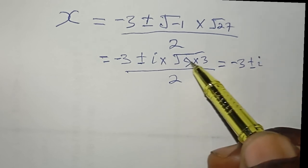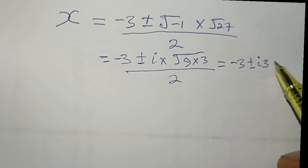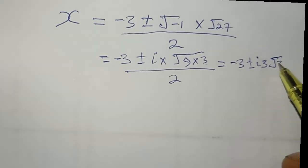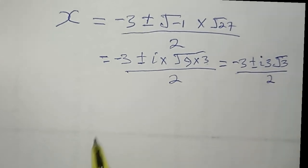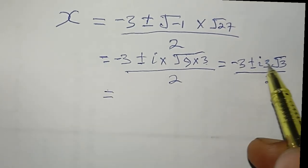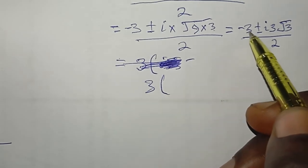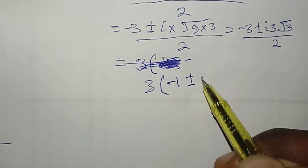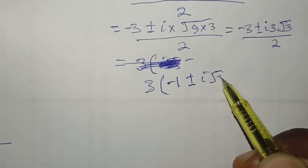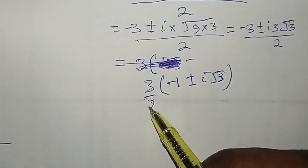Taking the square root of 9 out gives us 3, so √27 = 3√3. We can then factor out 3, giving x = (−3 ± 3i√3) / 2, which simplifies to x = 3(−1 ± i√3) / 2.